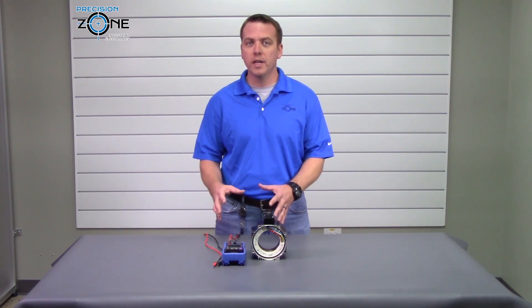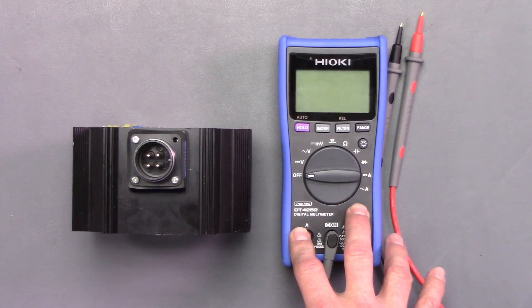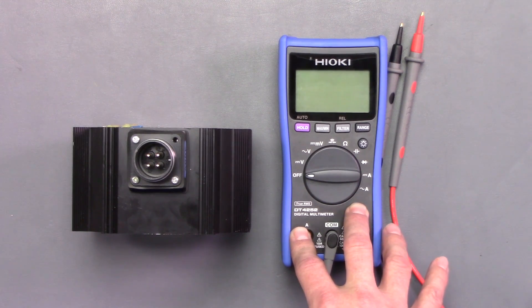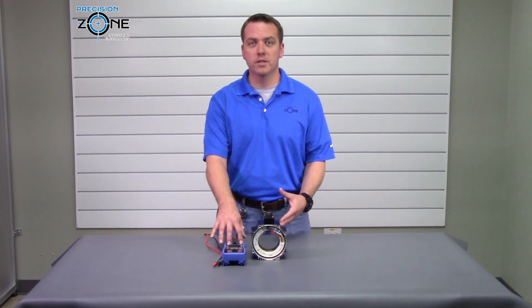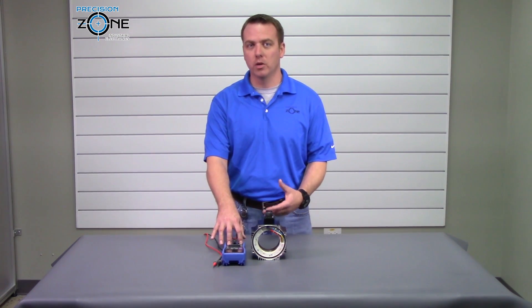If you use a quality digital multimeter like this Hioki you can get a rough reading of what may be going on. Now a milli-ohm meter is the proper meter to use and this will give the most accurate reading but for a field test a multimeter will do.